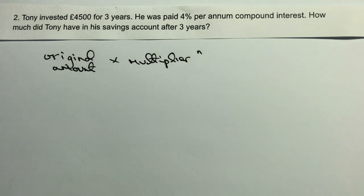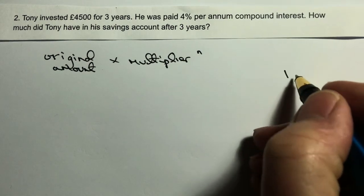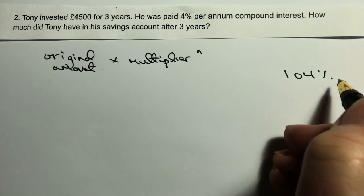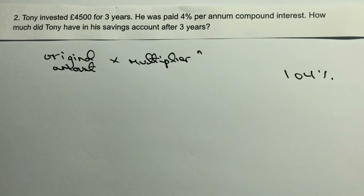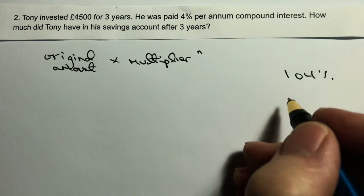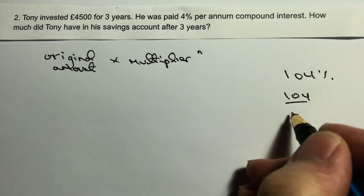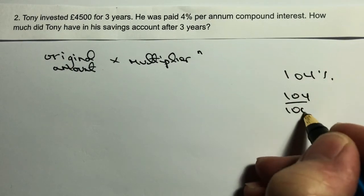With compound interest, what it means is that you get 100% of the money plus the extra 4%. So each year what you're actually getting is 104%. As you know, percent means out of 100, so I'm going to write that as 104 divided by 100.